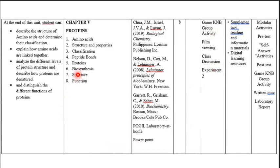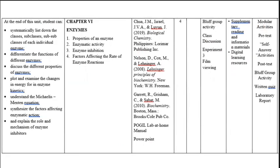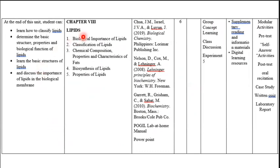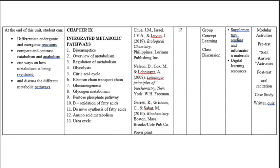For chapter five, proteins, we will have a 'Cannibal' group activity. For chapter six, enzymes, a 'Bluff' group activity. For chapter seven, carbohydrates, a picture-to-picture upload group activity. For chapter nine, integrated metabolic pathways — this is the large bulk of your finals — it would be group reporting. Based on your self-introduction forum, you really appreciated group reporting, so you will be doing that for chapter nine.